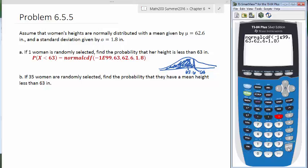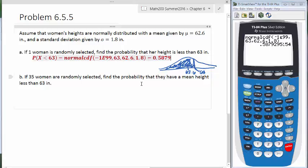Okay, we'll run this. And we get a 0.5879, let's call it. So this is our probability. If we select one woman, the probability that her height is less than 63 inches.